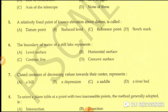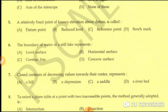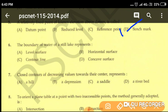Question number five: a relatively fixed point of known elevation above datum is known as — option A: datum point, option B: reduced level, option C: reference point, option D: benchmark. The correct answer is benchmark — option D is the correct answer.